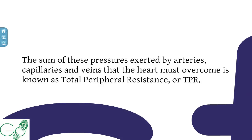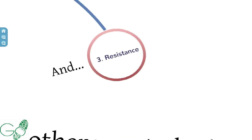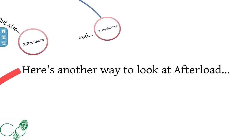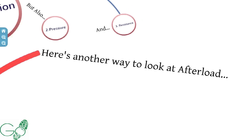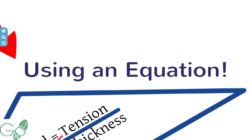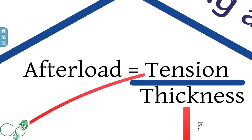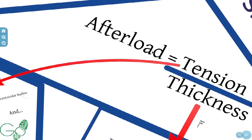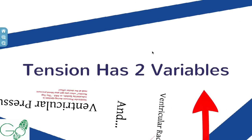Here's another way to look at afterload using an equation. Afterload equals tension divided by thickness. Tension is actually composed of two variables, which we'll break down now.